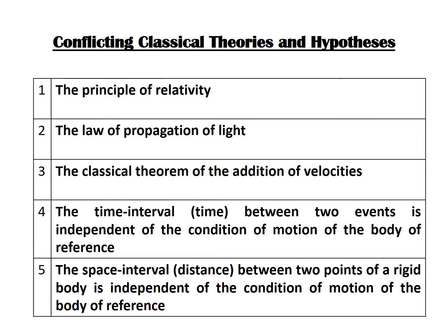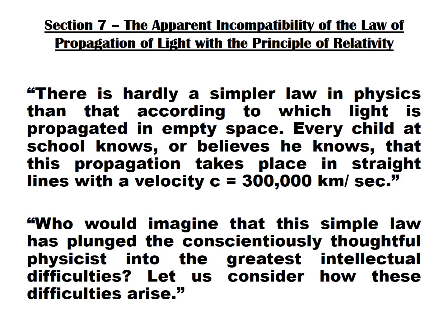He alerts us to the potential issues in section seven of his book. He tells us that every child knows light travels at a constant speed of 300,000 kilometers per second in empty space. But then he alerts us: who would imagine that this simple law has plunged the conscientious, thoughtful physicist into the greatest intellectual difficulties? Let us consider how these difficulties arise — and this is what we shall consider in our next video.